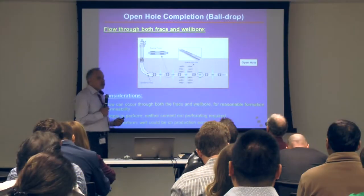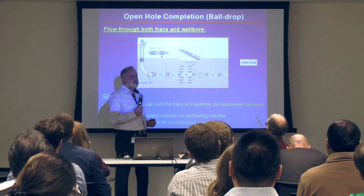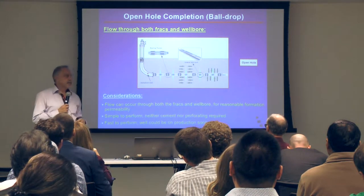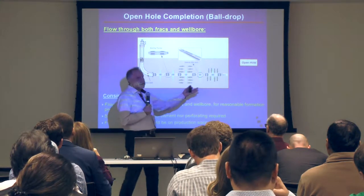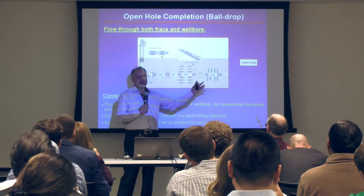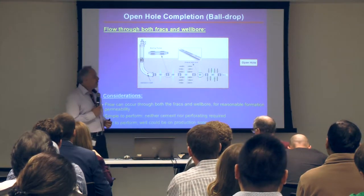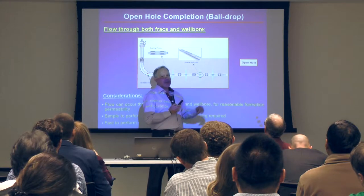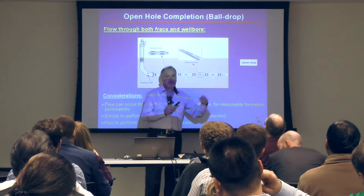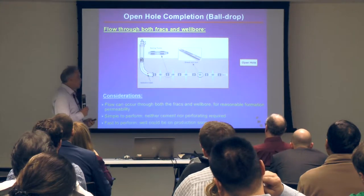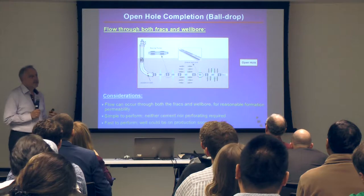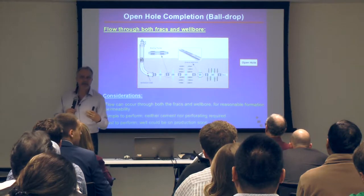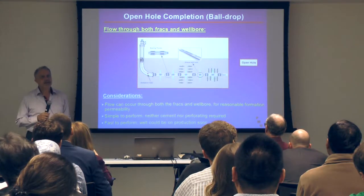With open hole completion, especially Packers Plus, you run the liner and have a bunch of inflatable packers, inflated to provide isolation, with a sliding sleeve in between to frack one stage at a time. One advantage I like: when you frack the well, you have flow along the frack wings but also flow along the wellbore, which is a very good feature — you take advantage of the matrix flowing into the wellbore. By fracturing in open hole, you can also have branch fractures, giving you good performance.